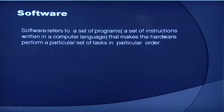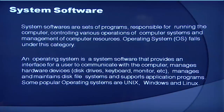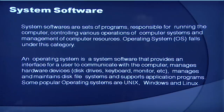A software — be it your operating system or word processing systems — these are different types of software. You can classify software into two categories: system software and application software. System softwares are a set of programs responsible for running the computer, controlling various operations of computer systems and management of computer resources. Operating system falls under this category. An OS is a system software that provides an interface for a user to communicate with the computer, manages hardware devices like disk drives, keyboard and monitor, and manages disk file systems and supports application programs. Some popular operating systems are Unix, Windows, Linux etc.